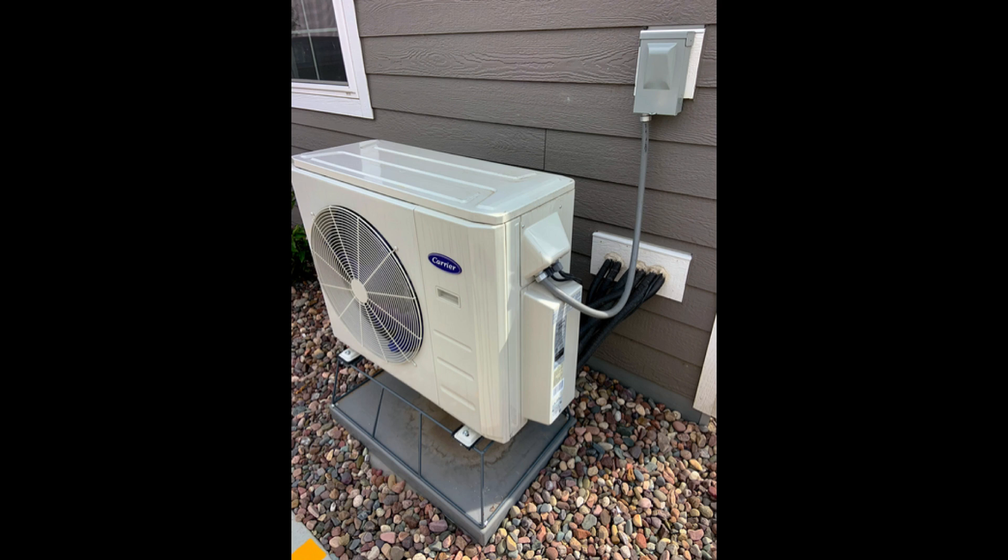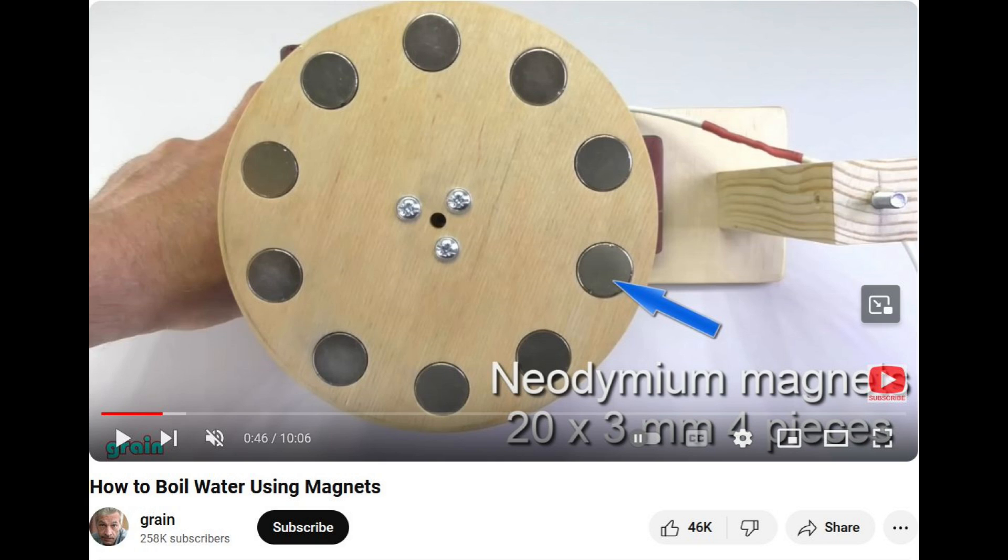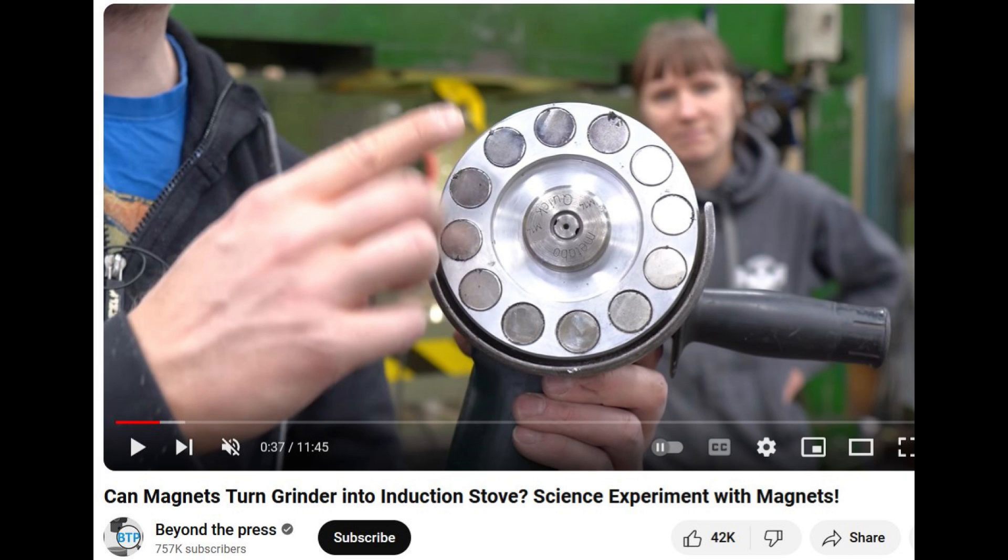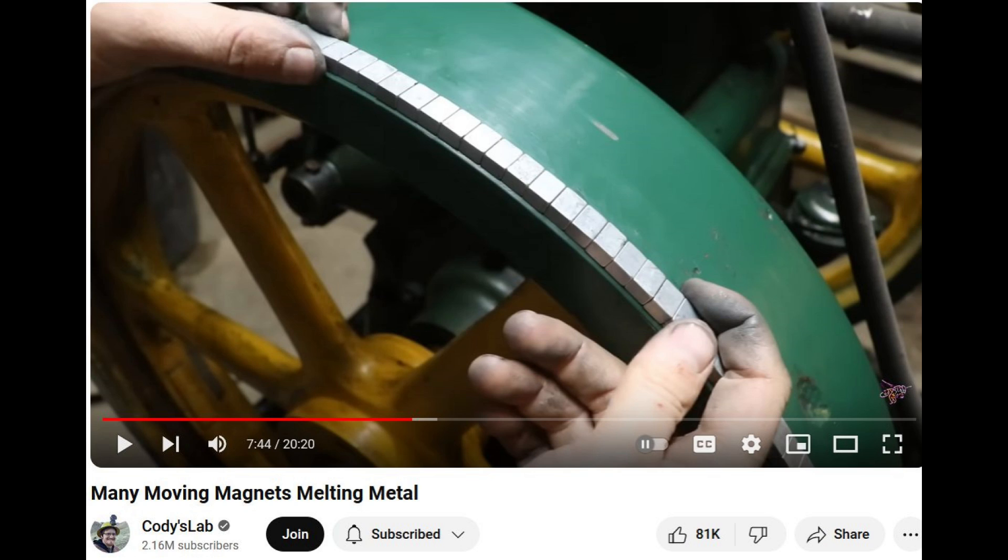And then there are induction heaters - brilliant things. If you spin a ring of magnets close to a metal plate, that plate will get hot. I love it. But again, those things work best at high speeds, and the only way to test how well they would work in this particular context with the slow moving windmill is to build one.